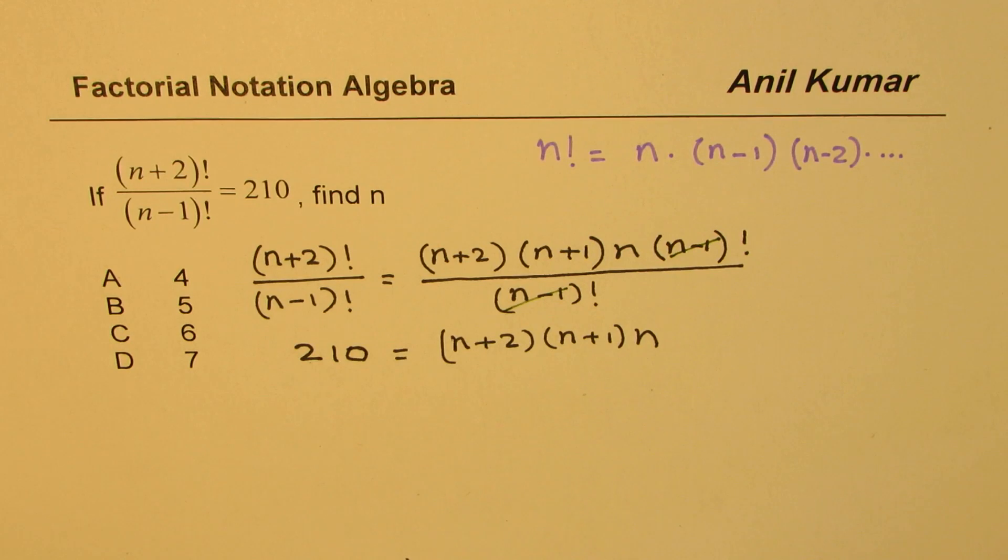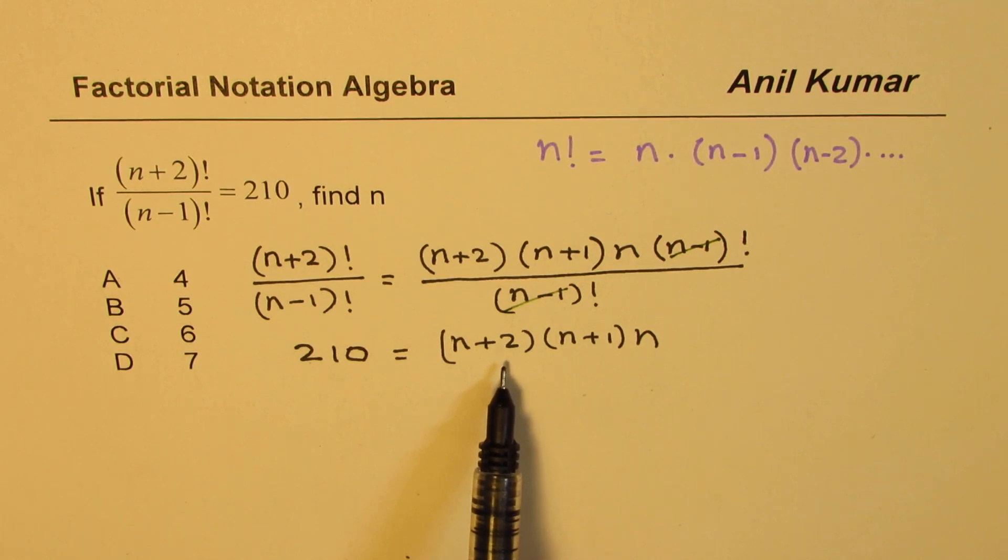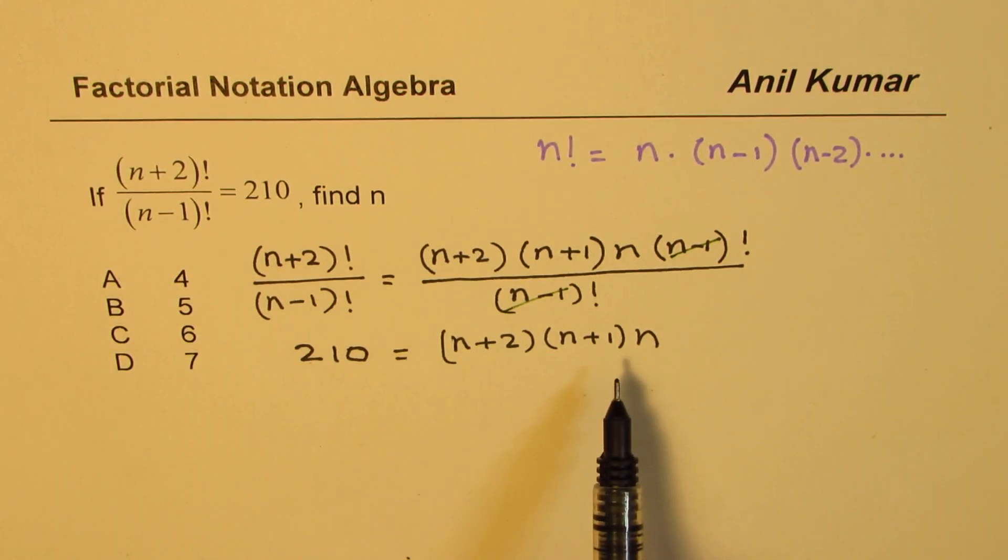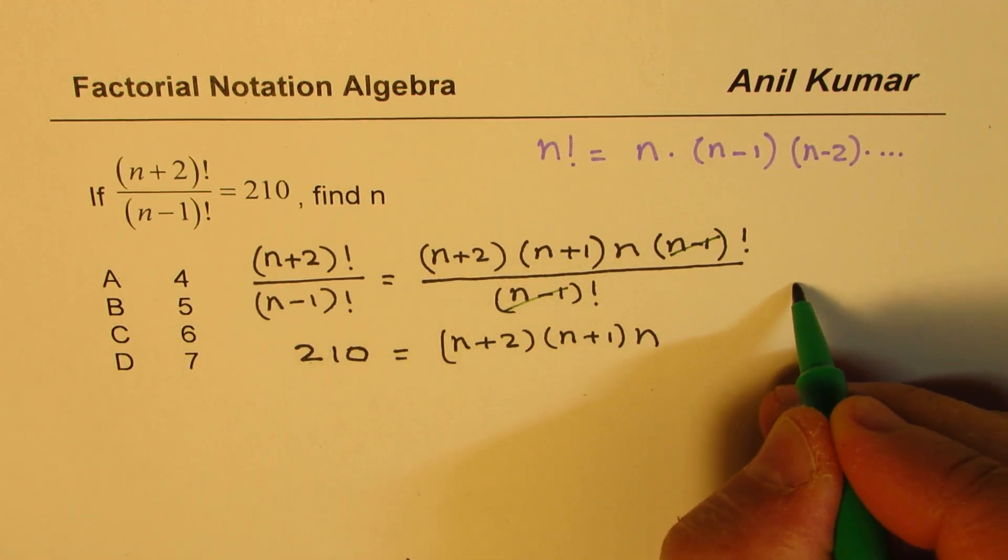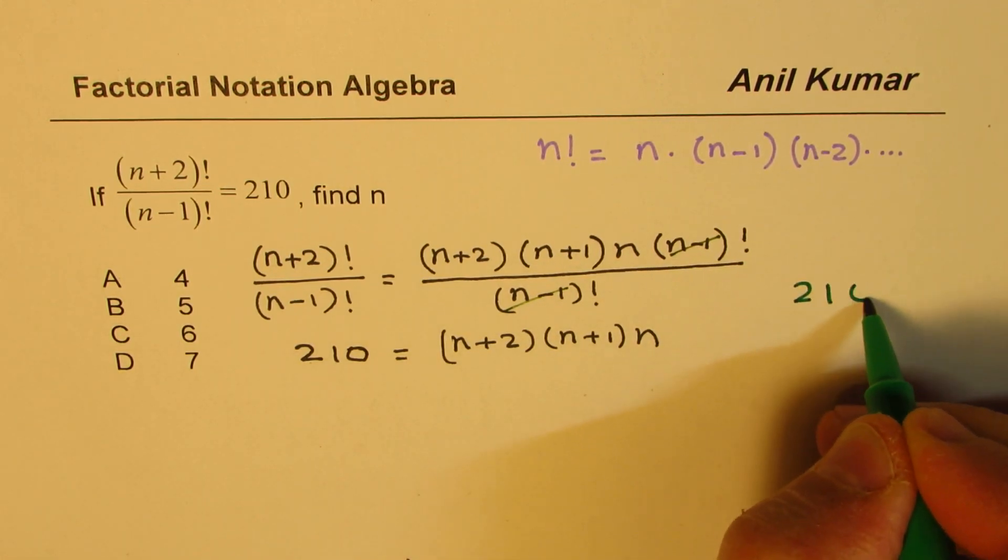That is how we get a cubic equation. One way to solve this cubic equation is definitely that you expand this, you get cubic, and then you do trial and error. But what we can do is we can do trial and error now. Here is a neat technique of solving such a question. At this stage, we can actually work with factors of 210.